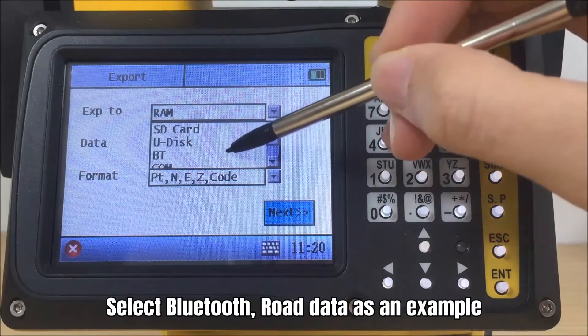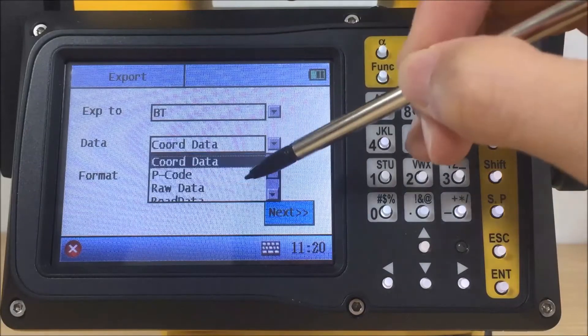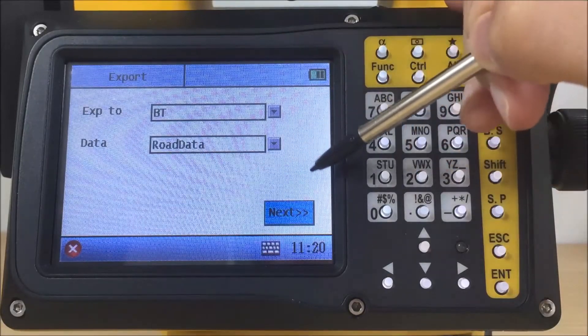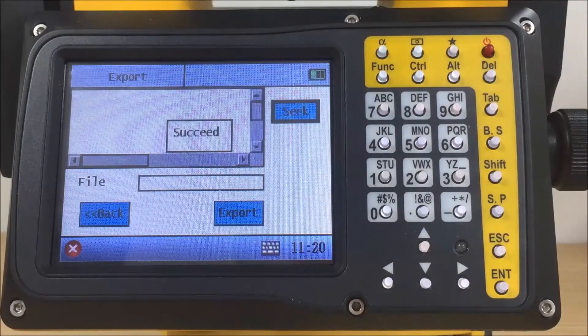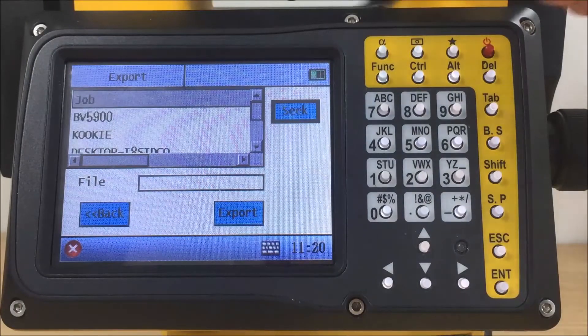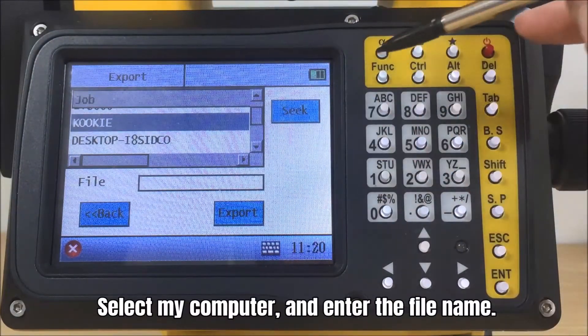Select Bluetooth, road data as an example. Click seek to search the enabled device. Select my computer and enter the file name.